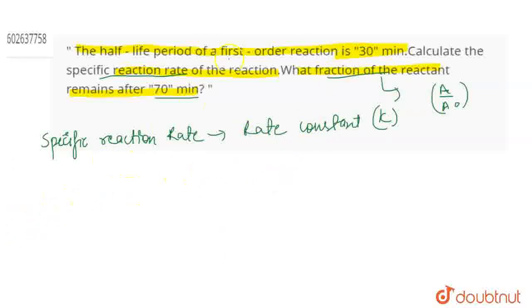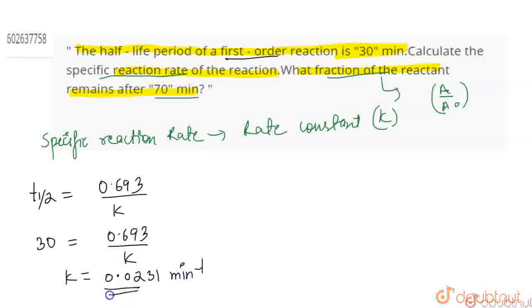For first order reaction, we need the rate constant because the half-life period is given. We know that t-half equals 0.693 upon k. Half-life is 30 minutes, and 0.693 divided by k. When you solve it, it will come out to be 0.0231 minute inverse.